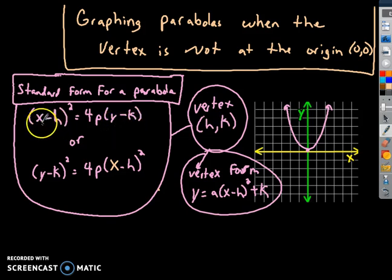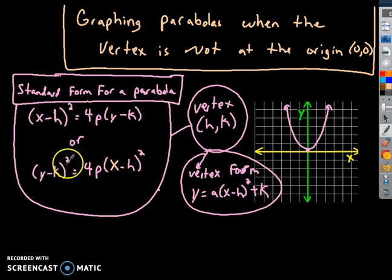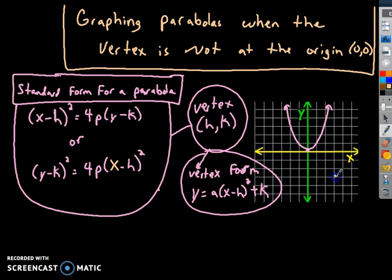If x is getting squared, it's still a parabola that goes up and down. If y is getting squared, it's still a parabola that goes left or right. The only difference is that now instead of having a vertex at (0,0) every single time, your vertex could be anywhere — like here, over 3 down 3.